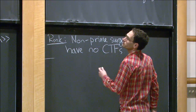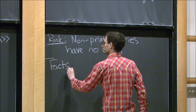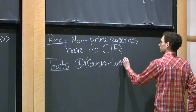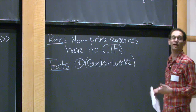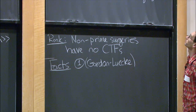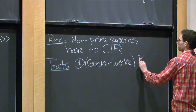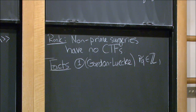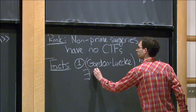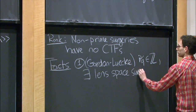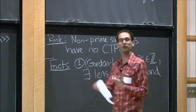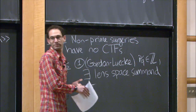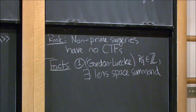Let me review what's known about the Cabling Conjecture. The first result, due to Gordon and Luecke, constrains what slopes can yield non-prime surgery: the surgery slope must be integral. Further, they show there must exist a non-trivial lens space summand. This means there's non-trivial torsion in first homology, so we can't get homology spheres or homology S²×S¹ as reducible surgeries.